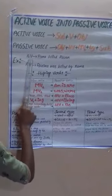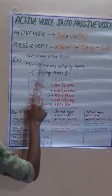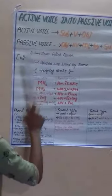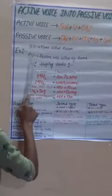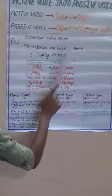Example — Active: Rama killed Ravana. Into Passive: Ravana was killed by Rama.